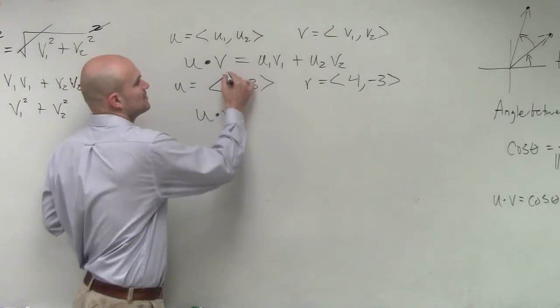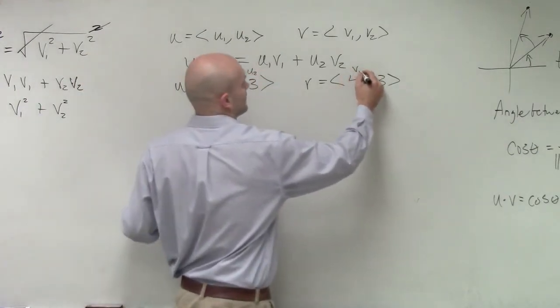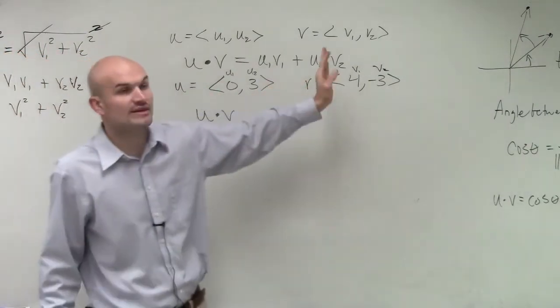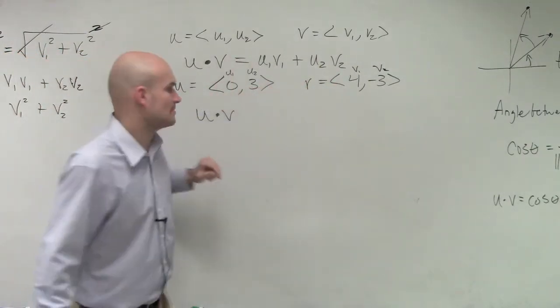So the first thing we want to do is make sure we label our coordinates correctly: u1, u2, v1, v2. Now what we're simply going to do is multiply through.